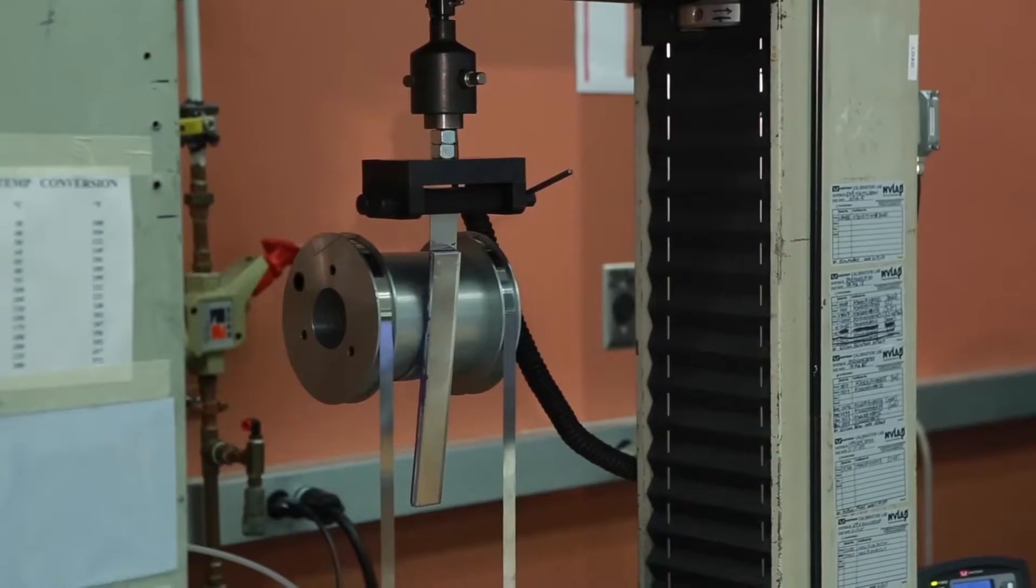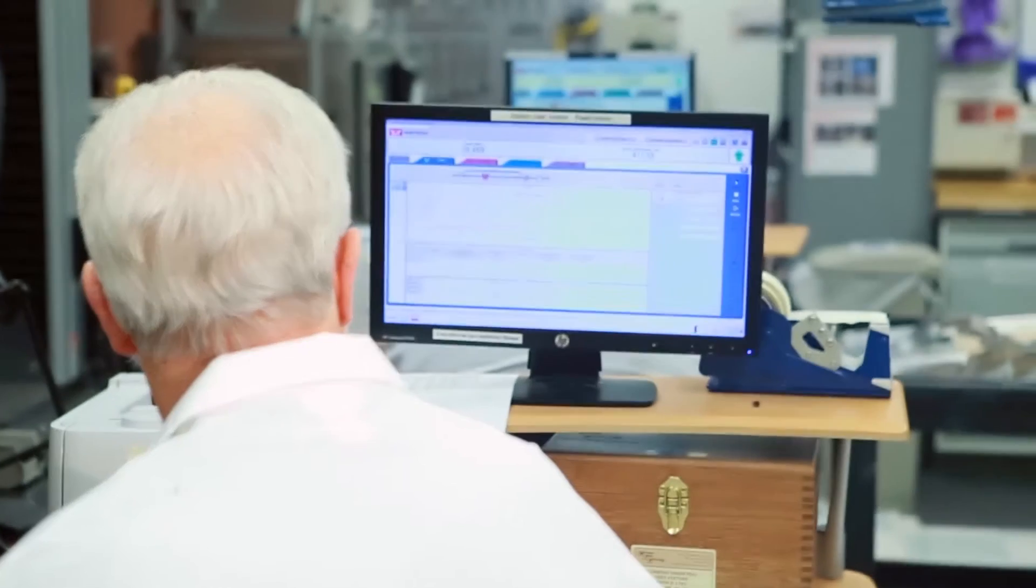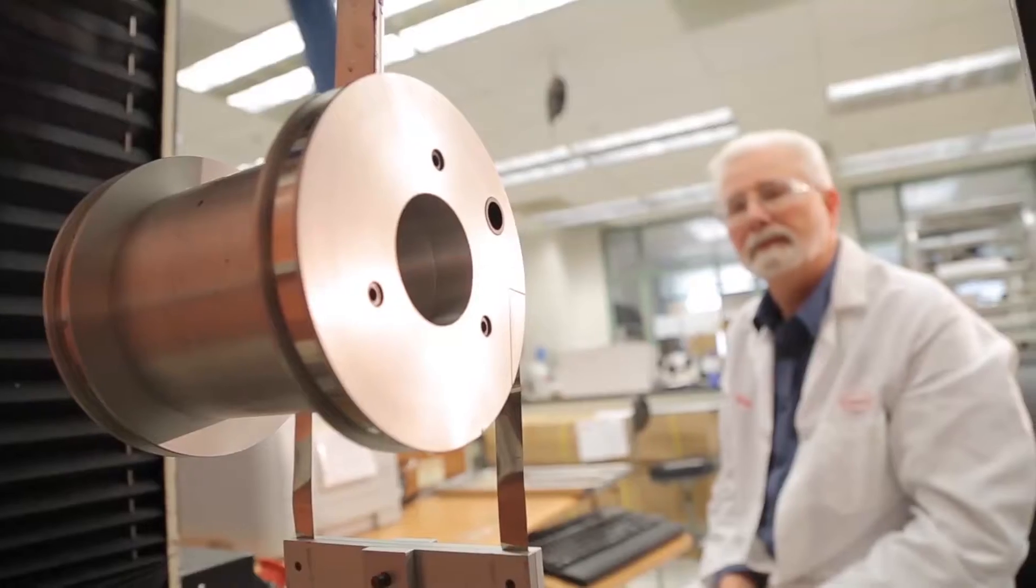One method, called the climbing drum peel test, allows for calculation of an adhesive's peel strength independent of the substrate it is bonded to.